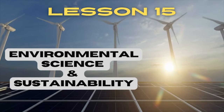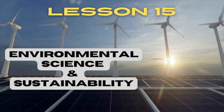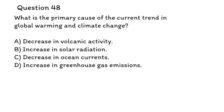Lesson 15: Environmental Science and Sustainability. Question 48: What is the primary cause of the current trend in global warming and climate change? The correct answer is D — increase in greenhouse gas emissions. These gases, which include carbon dioxide, methane, and nitrous oxide, trap heat in the Earth's atmosphere, leading to a warming effect known as the greenhouse effect.